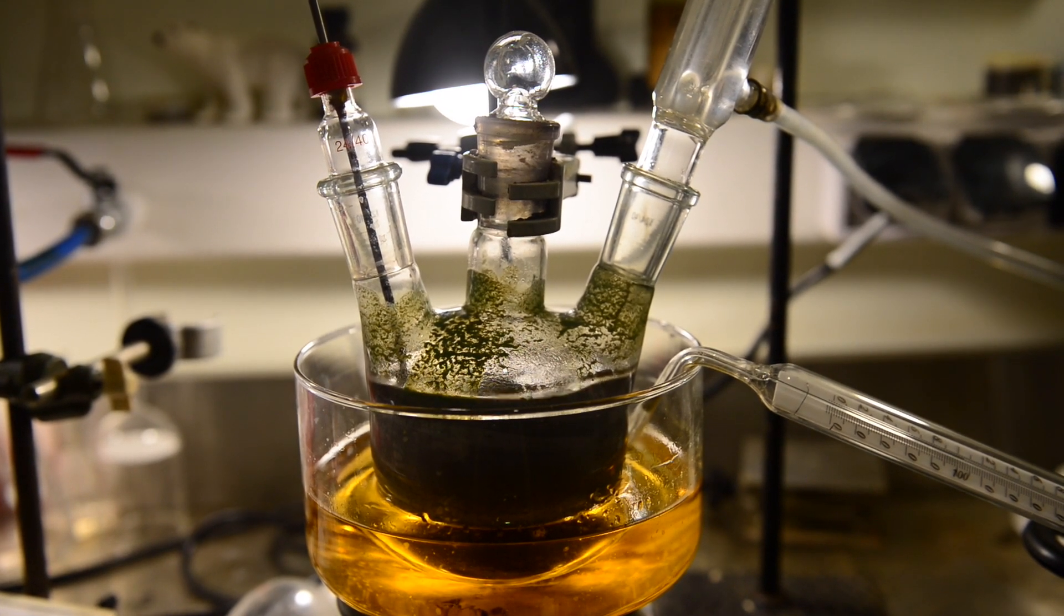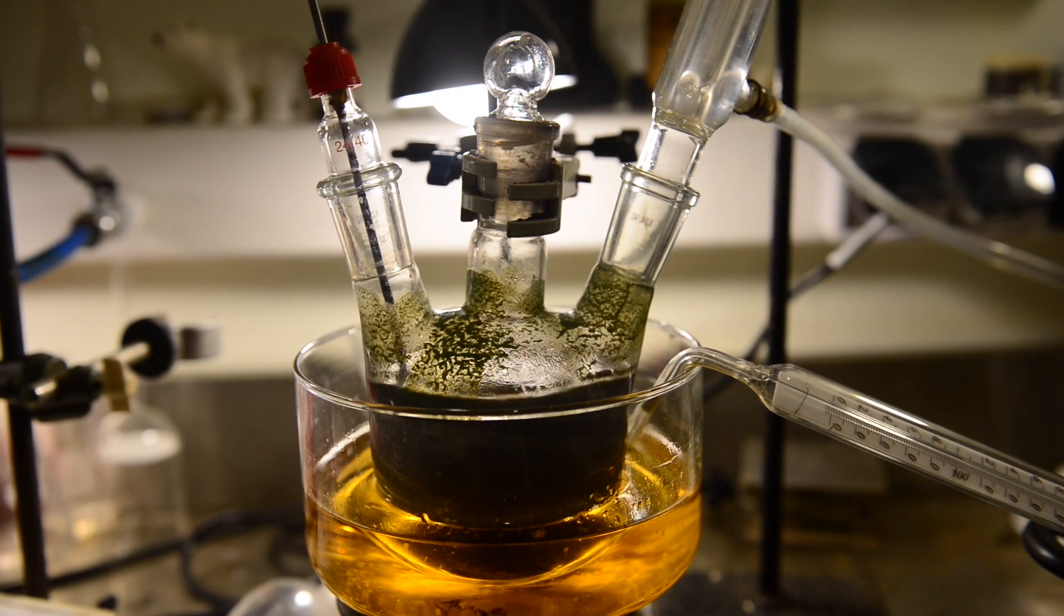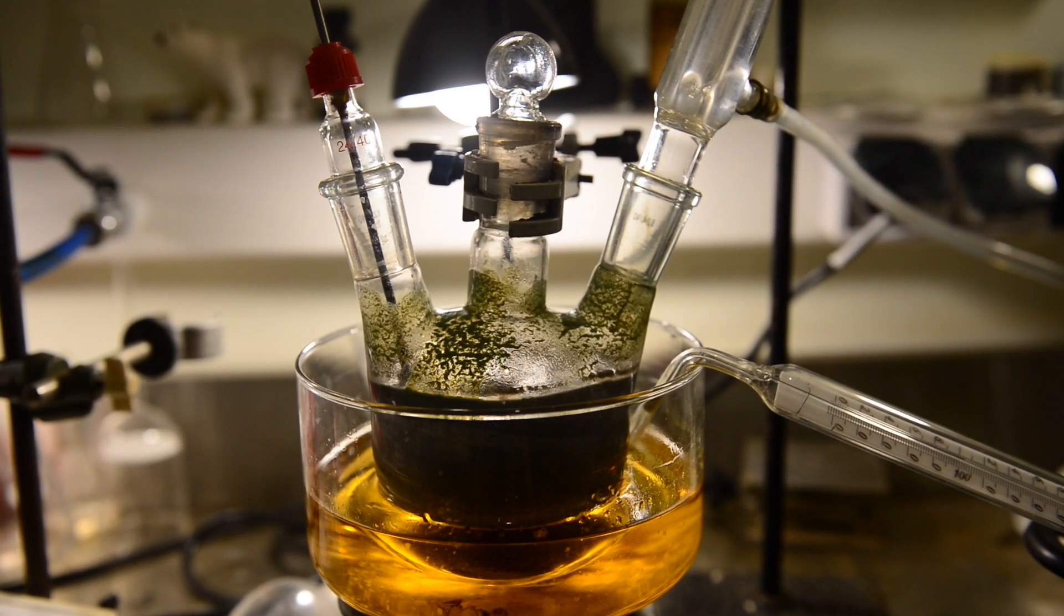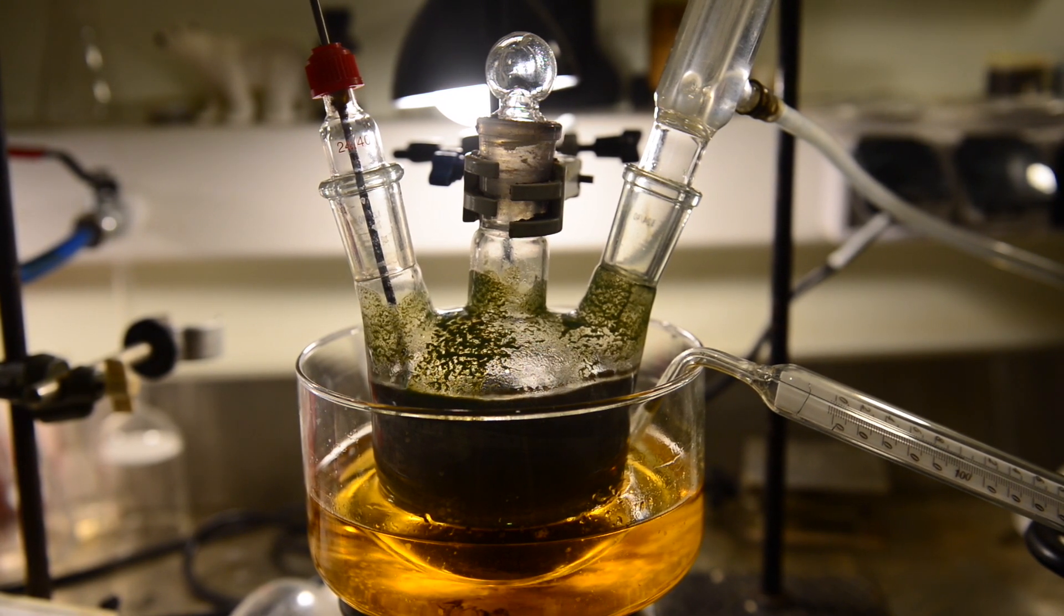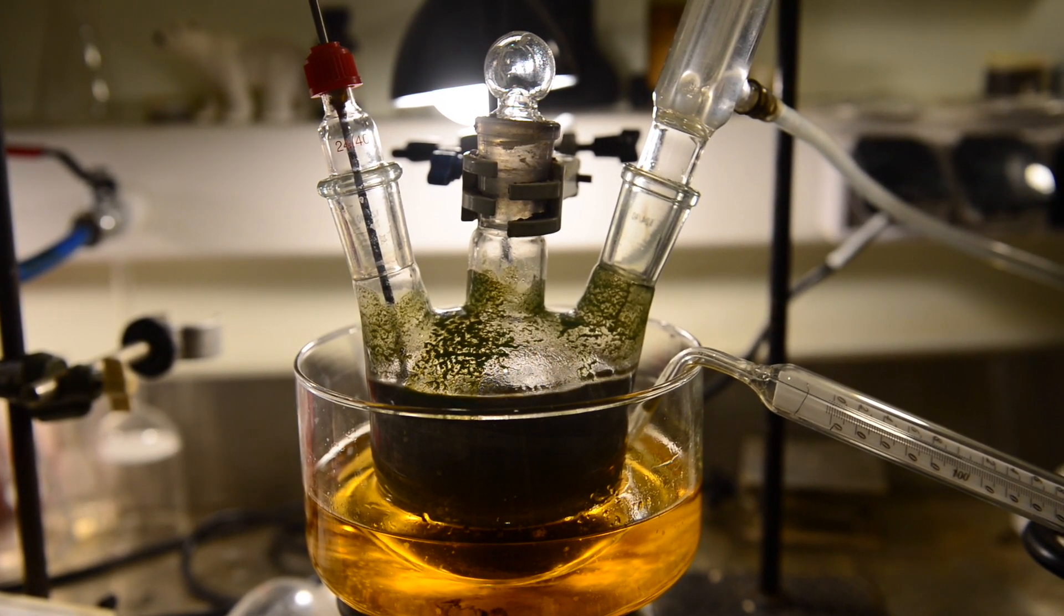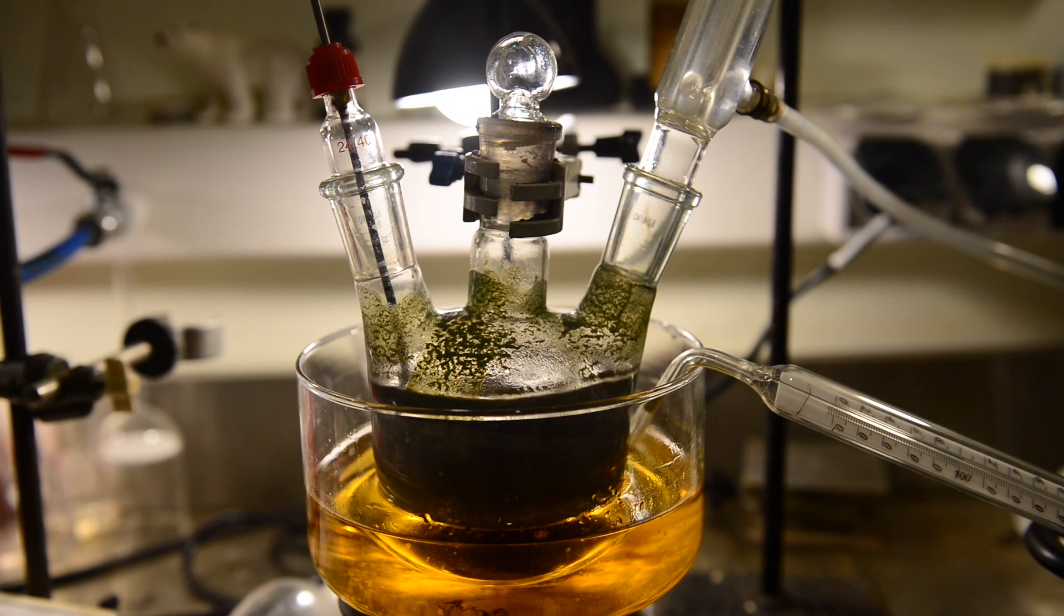After that I change the setup and add condenser on the third neck. At the end of the condenser I connect the same tube going to the window outside. Now I'm going to heat the reaction mixture to 90 degrees Celsius in the course of an hour and then at 100 degrees for another hour. Okay I'm halfway done.